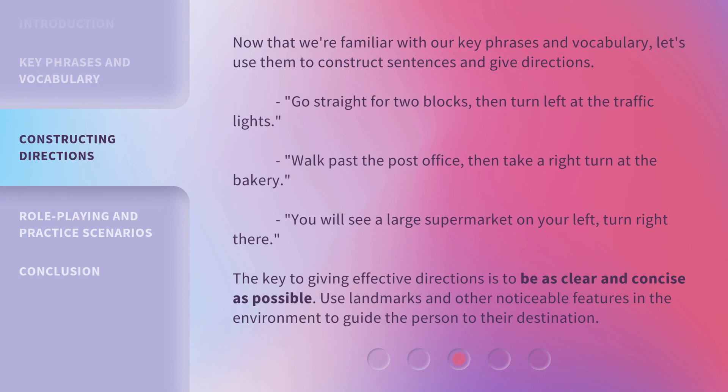Now that we're familiar with our key phrases and vocabulary, let's use them to construct sentences and give directions. For example: Go straight for two blocks, then turn left at the traffic lights. Walk past the post office, then take a right turn at the bakery. You will see a large supermarket on your left — turn right there.